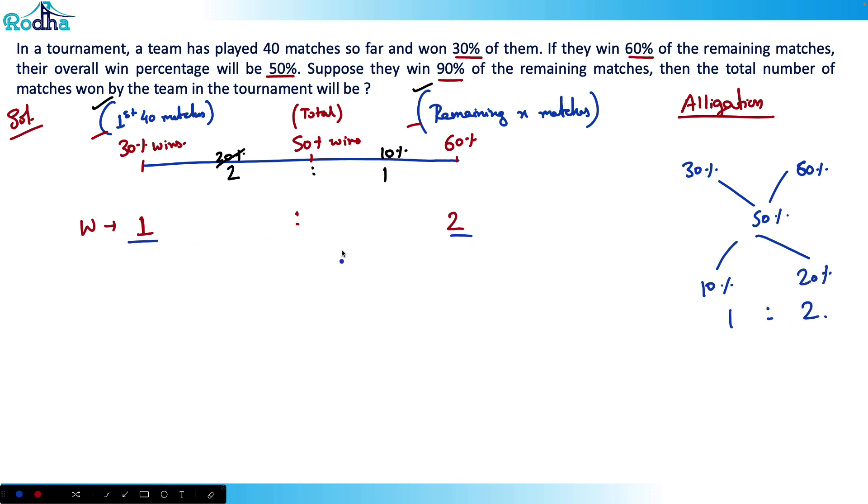I've got here 1:2. That means it basically says that for first 40 matches, if the number is 1, so remaining x matches, the number is 2. The first 40 matches and remaining x matches are in the ratio of 1:2. So we have got the value here. What is the value of 1? One represents 40 matches here.